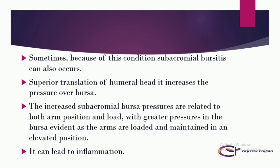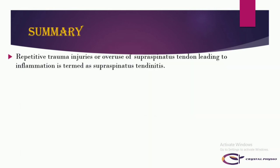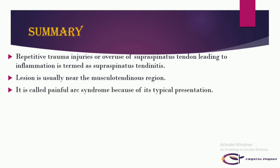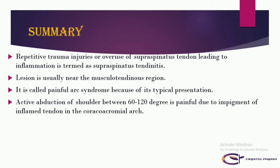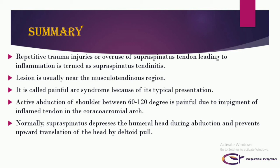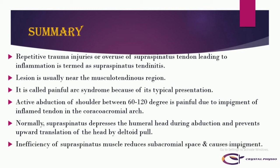To summarize: repetitive trauma, injuries, or overuse of the supraspinatus tendon leads to inflammation termed supraspinatus tendonitis. The lesion is usually near the musculotendinous region. It is called painful arc syndrome because active abduction of the shoulder between 60 to 120 degrees is painful due to impingement of the tendon in the coracoacromial arch. Normally the supraspinatus depresses the humeral head during abduction and prevents upward translation, but due to its insufficiency the subacromial space is reduced, causing impingement. Sometimes subacromial bursitis also precipitates the condition.